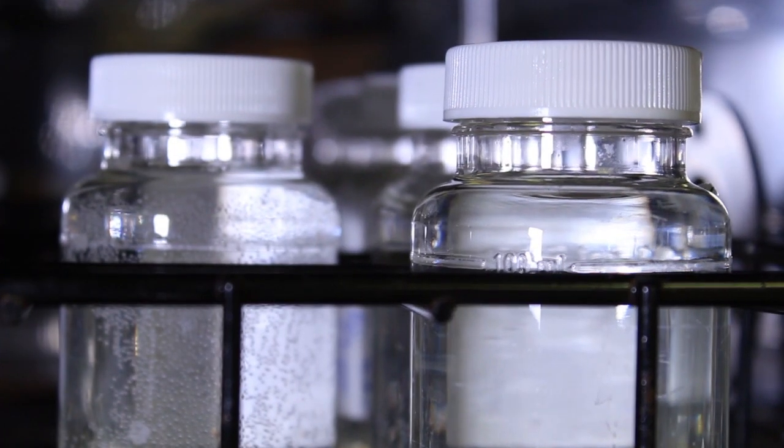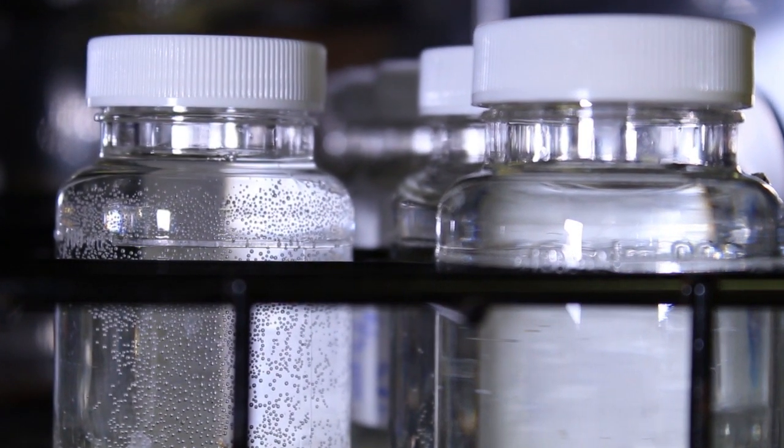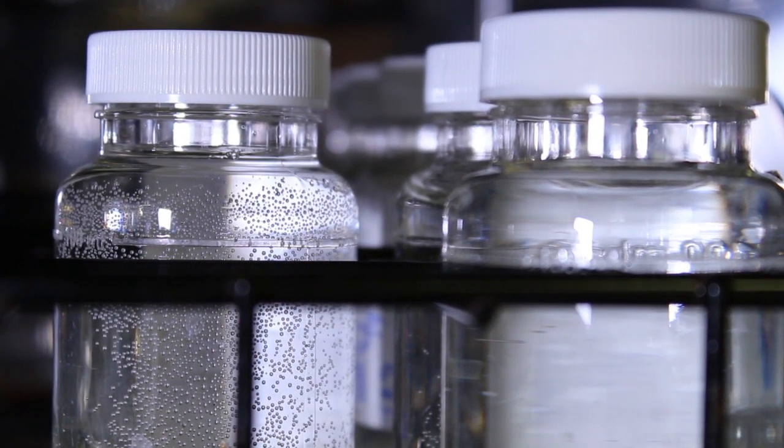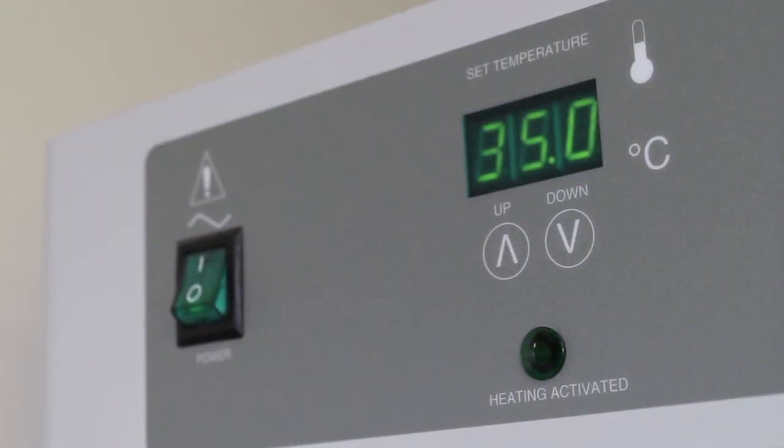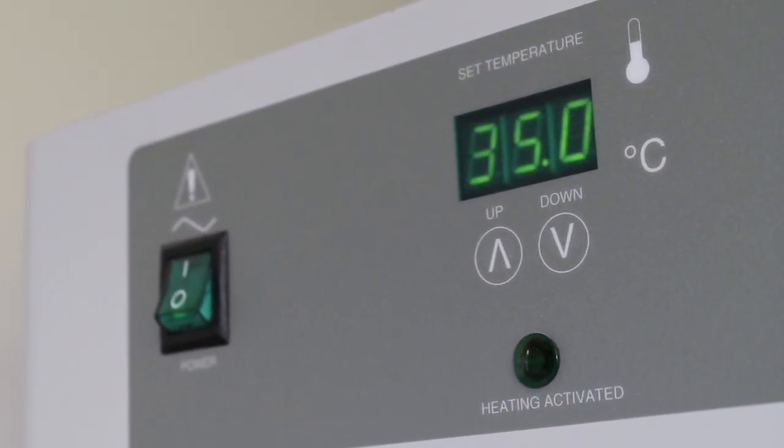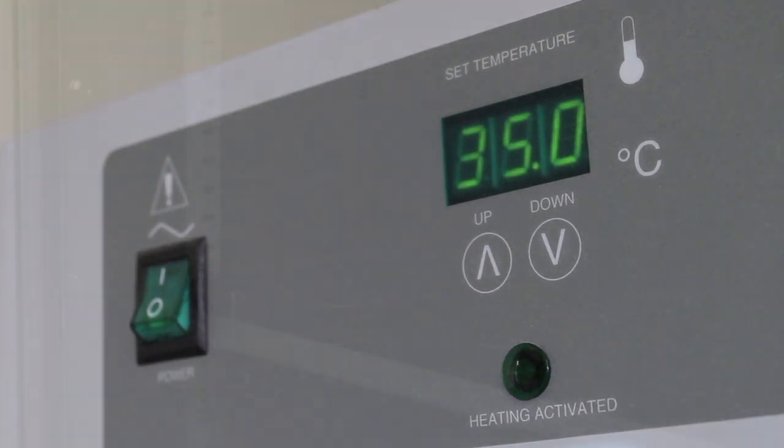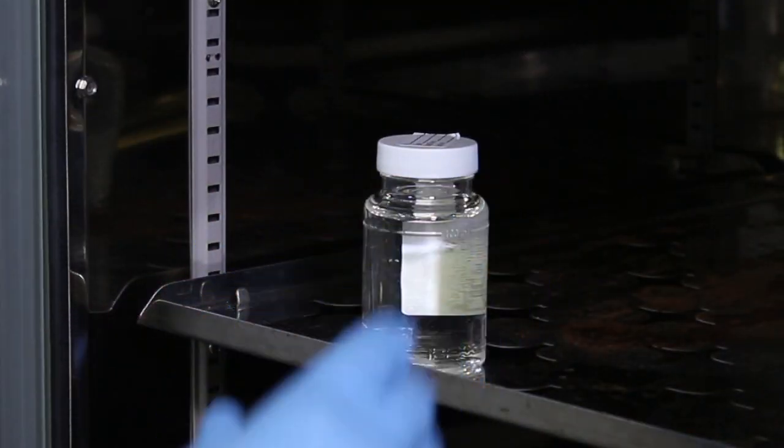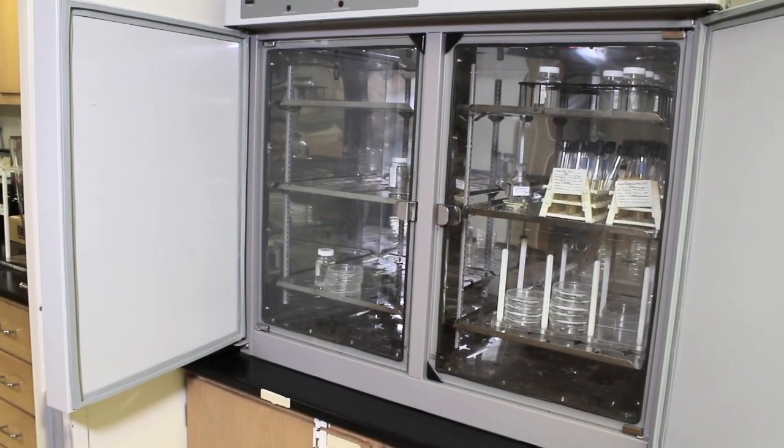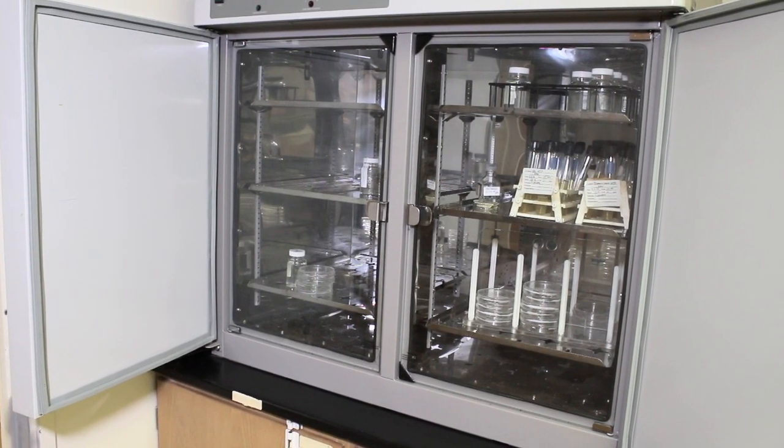The incubator is a laboratory device that provides a dark, constant temperature environment. The temperature is 35 degrees Celsius, approximately human body temperature. Together with the supply of food and water, the incubator is an ideal growth environment for the coliform bacteria.